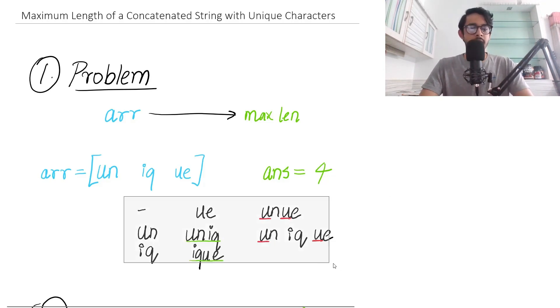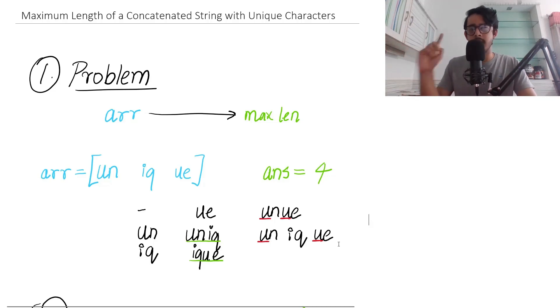I've written down all the subsequences of this particular array. We'll follow these two conditions. First, let's think about unique characters. In all these strings, both of these will get cancelled out because they have character u repeating in both.